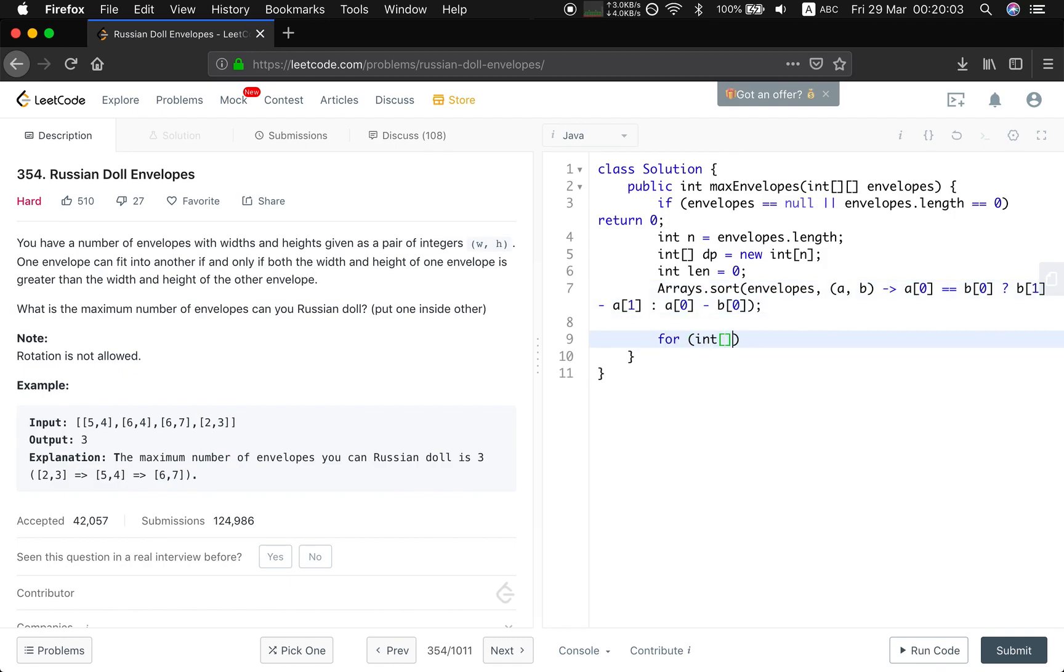And then for every envelope, we try to do the binary search. Arrays binary search in the DP starting at 0. And index is the length for this E[1], which is the height. So if the index is less than 0, which means it doesn't exist in the scope or the scope of the DP array.